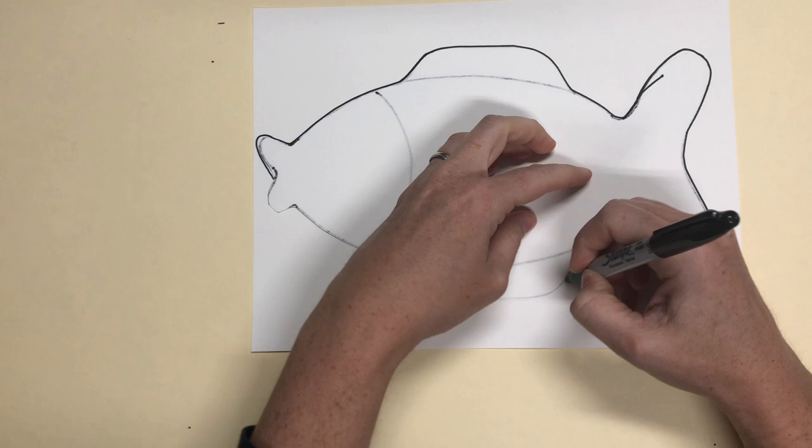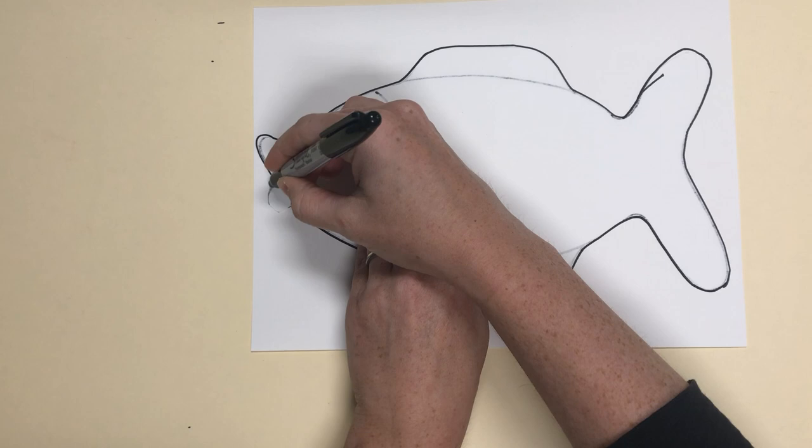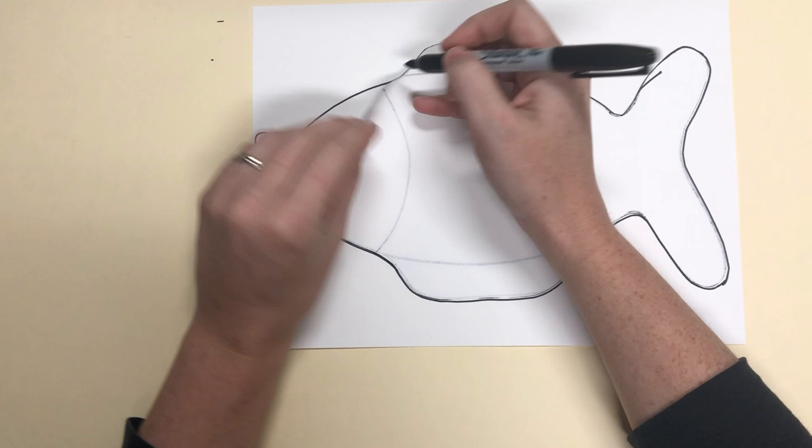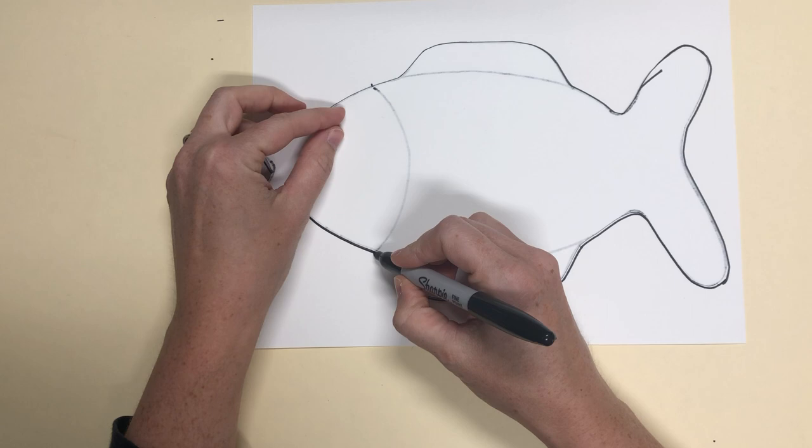Now I can see through mine because I'm drawing it with a marker, but if you can't see the line through your paper, you can kind of bend your fish up and go, okay, that's where I made the little mark for my line on my face right here.